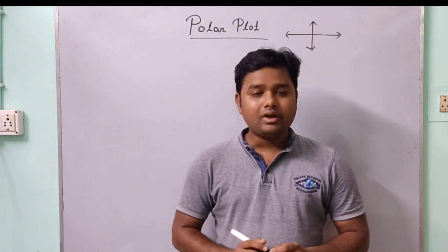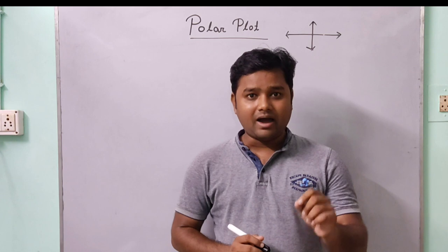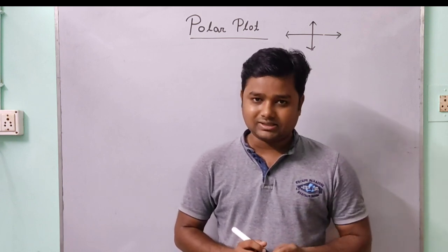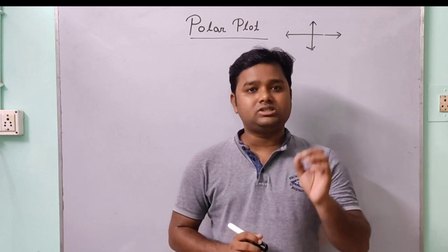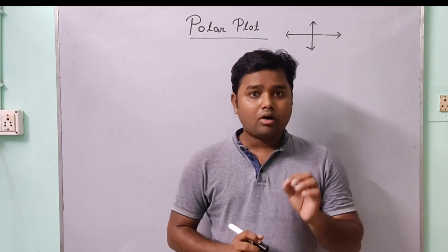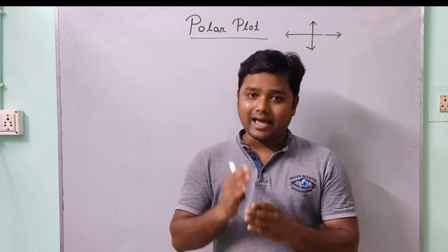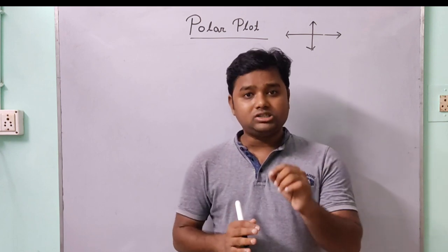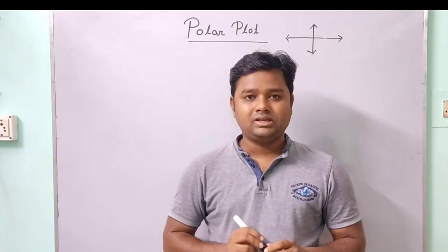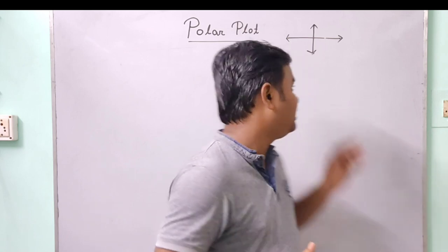In polar plot, we have to consider two things in mind: type and order. We have already discussed these in previous classes, so today we will just revise them. Type means the number of poles at the origin. How many times the pole at the origin repeats is known as the type of the system. Order means what is the maximum power of s.